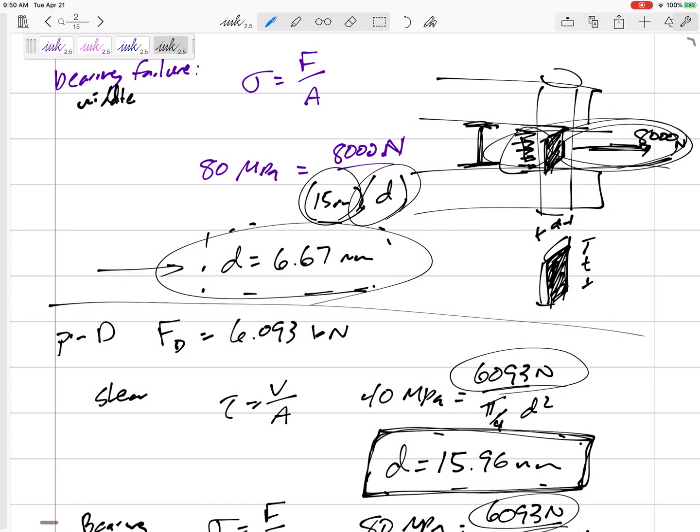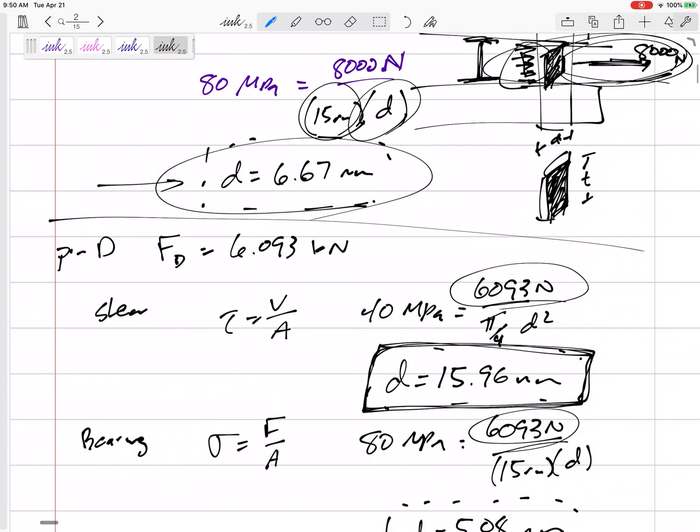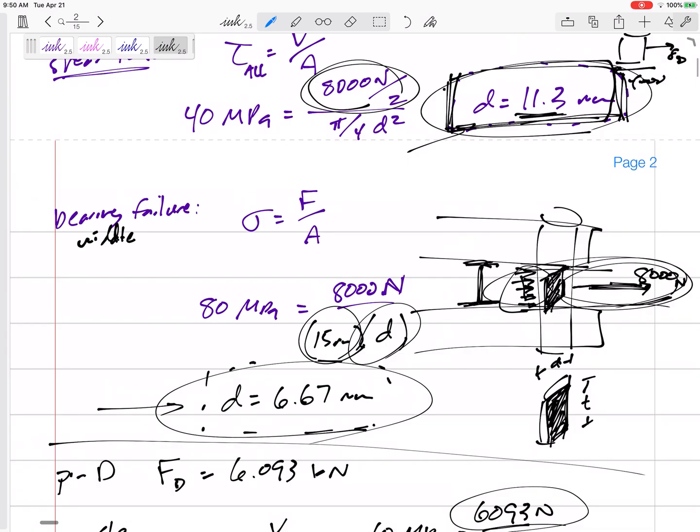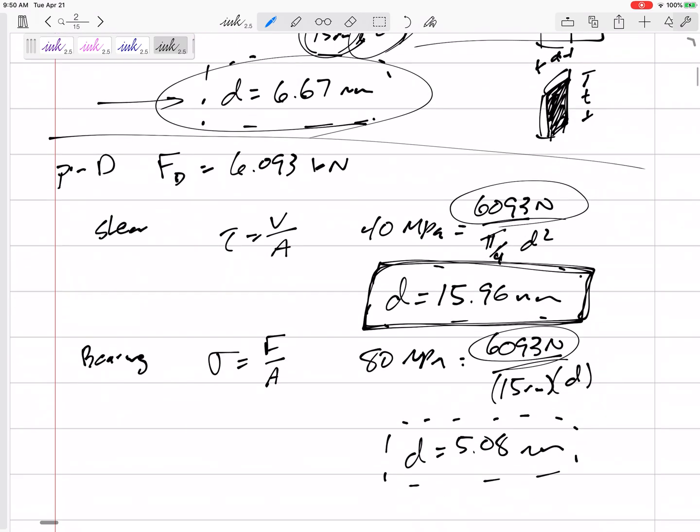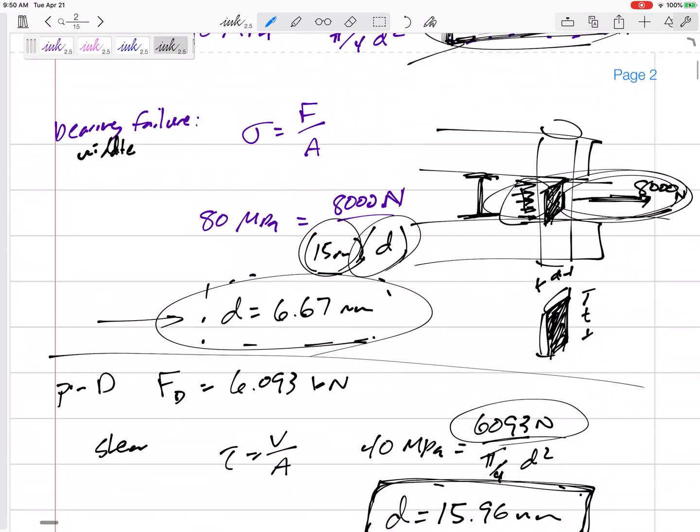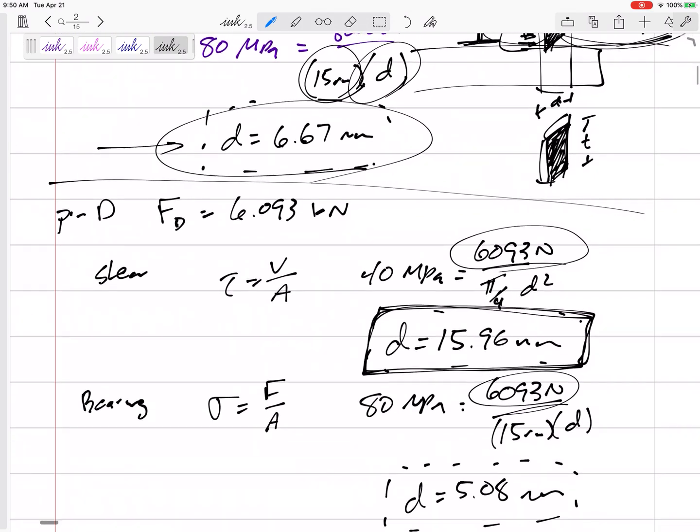You've got to test all the failure modes, all the different ways it might fail, to earn full credit. Then figure out which is the limiting factor, where it's going to fail first. For problems where you find diameters, the smallest diameter you can use is the larger of the two. For problems finding the maximum force that can be applied, it's the smaller of any forces you've calculated.